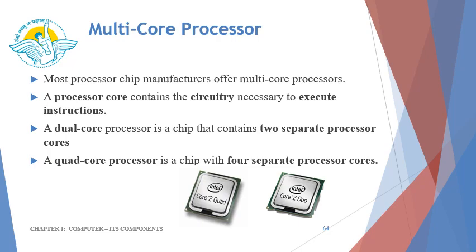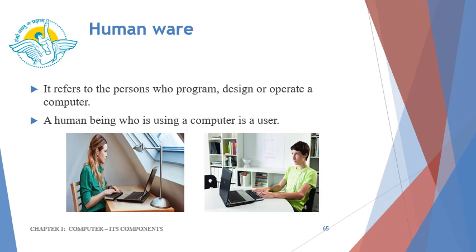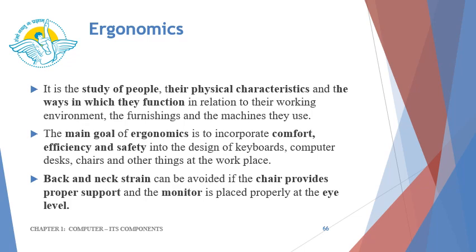The next term we are going to understand is human wear. It refers to the persons who program, design, or operate a computer. A human being who is using a computer is known as a user. Ergonomics is the study of people, their physical characteristics, and the ways in which they function in relation to their working environment, the furnishings, and the machines they use. The main goal of ergonomics is to incorporate comfort, efficiency, and safety into the design of keyboards, computer desks, chairs, and other things at the workplace. Back and neck strain can be avoided if the chair provides proper support and the monitor is placed properly at eye level.